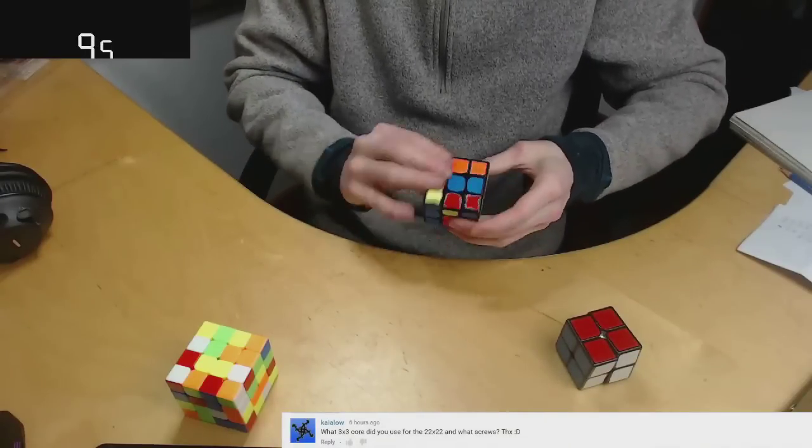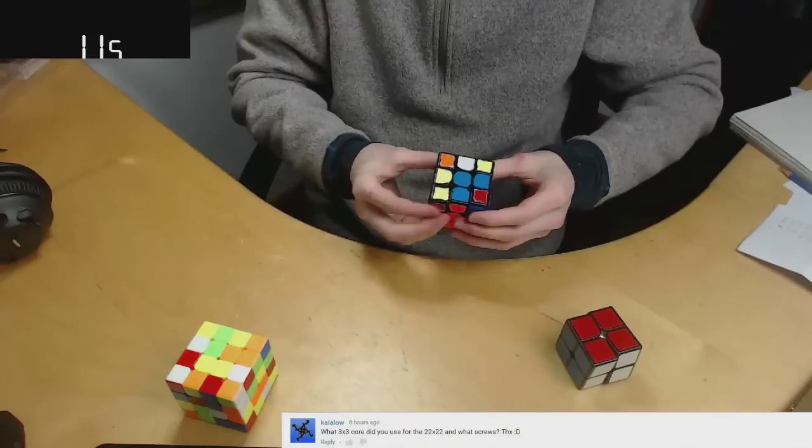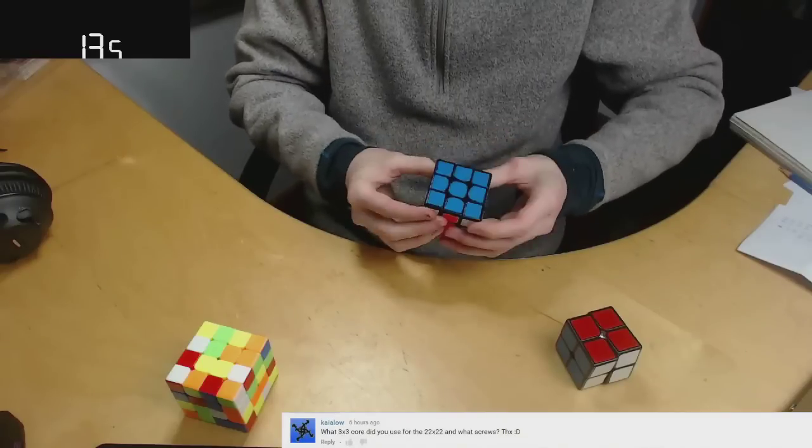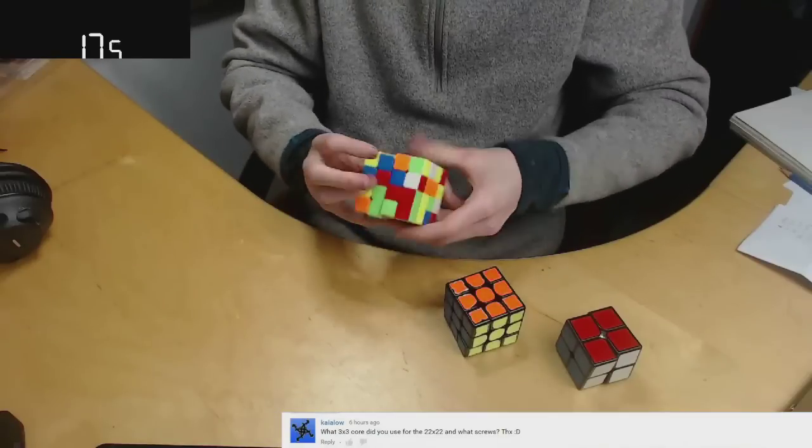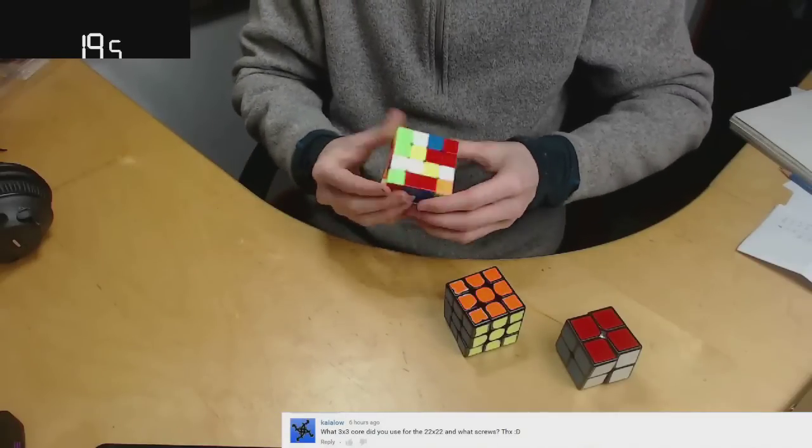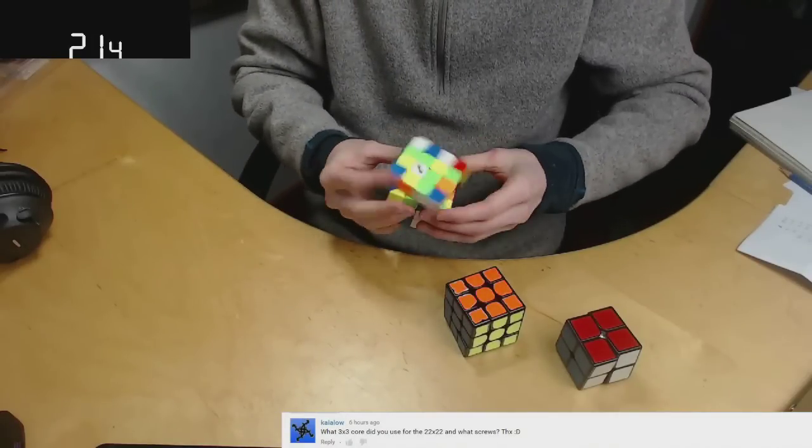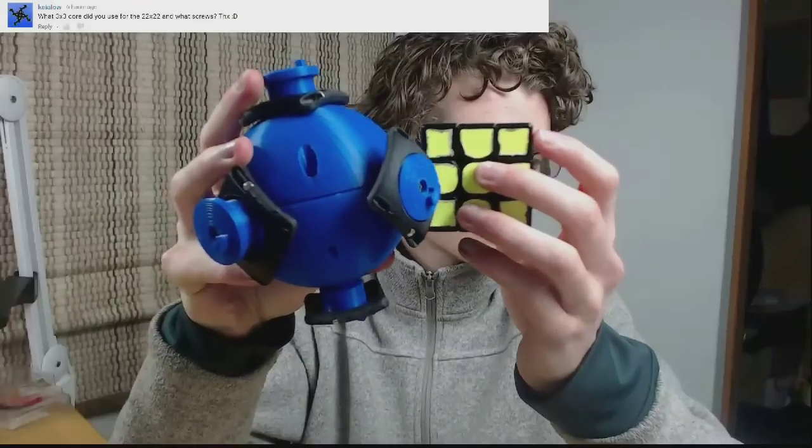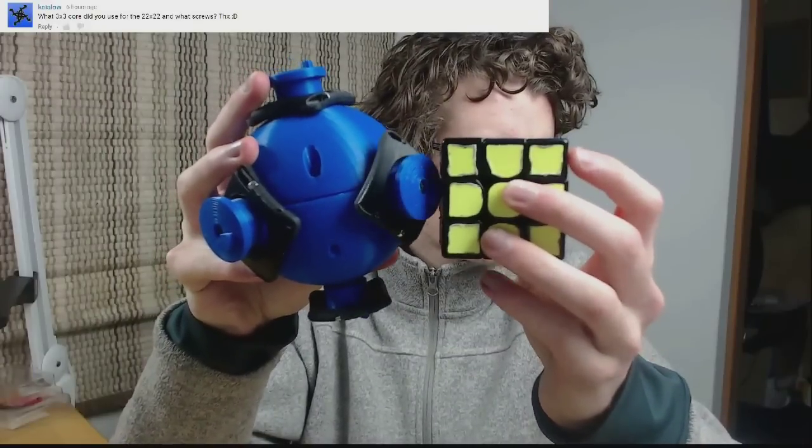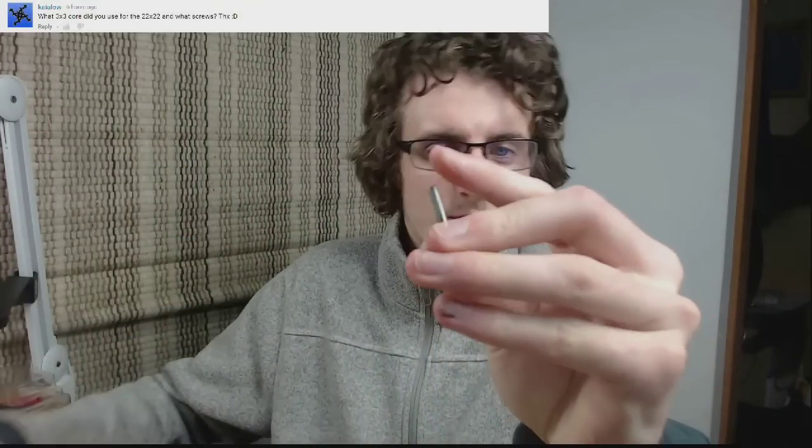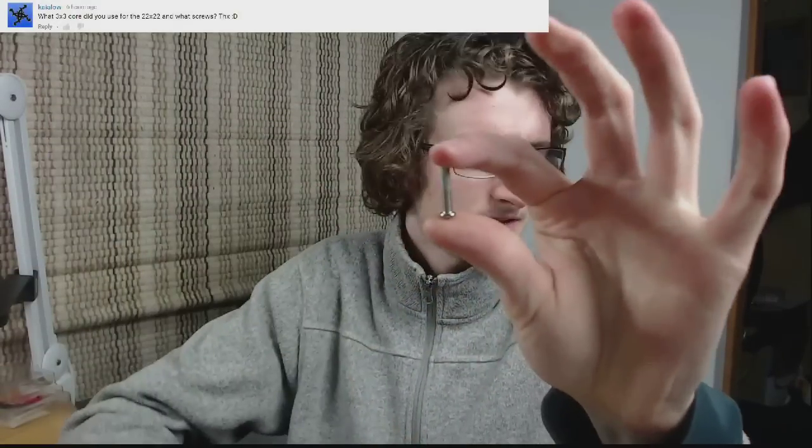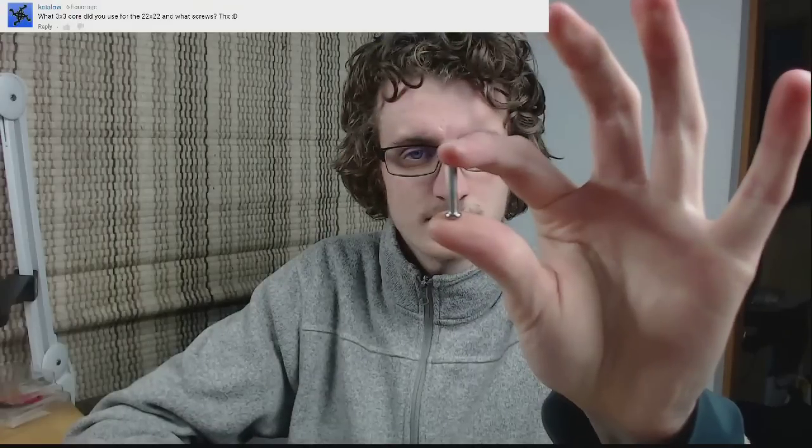What 3x3 core did you use for the 22x22 and what screws? So this is probably not super surprising to most people. I did not use a 3x3 core and screws. You can see here's the core, here's the 3x3. The core is much bigger than the 3x3. As for the screws, I used these like M4 screws. They're actually really short now that I look at it.